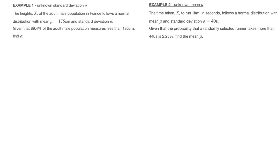In this video on the standard normal distribution, we learn how to find an unknown standard deviation as well as an unknown mean when working with a normal distribution. The idea for both examples, and for any other example like it, is that an unknown standard deviation as well as an unknown mean can be found with a three-step method.